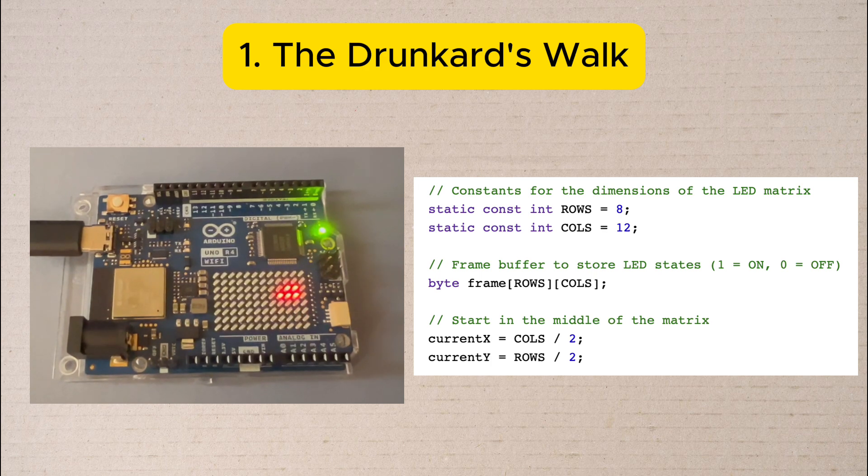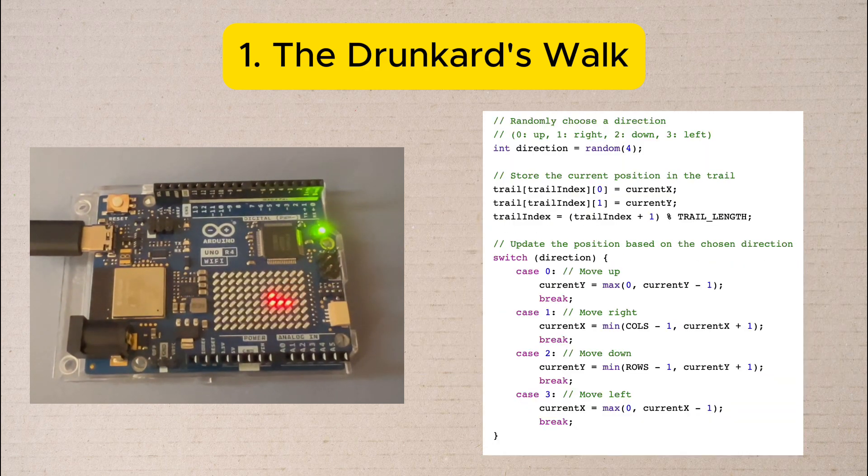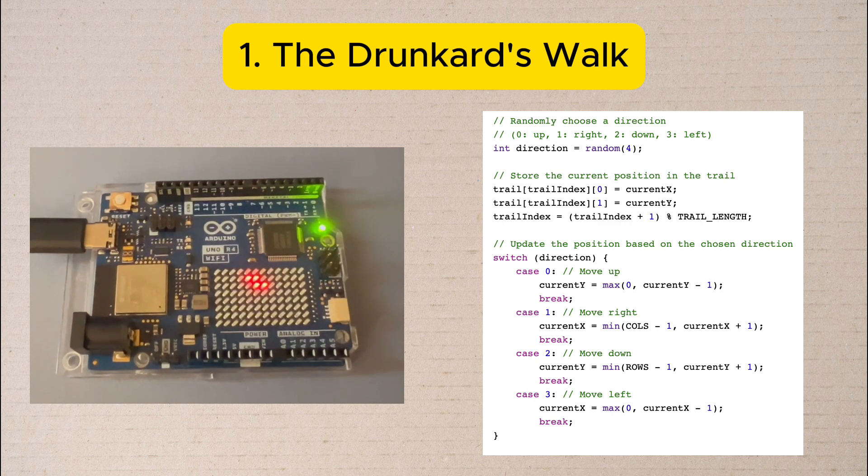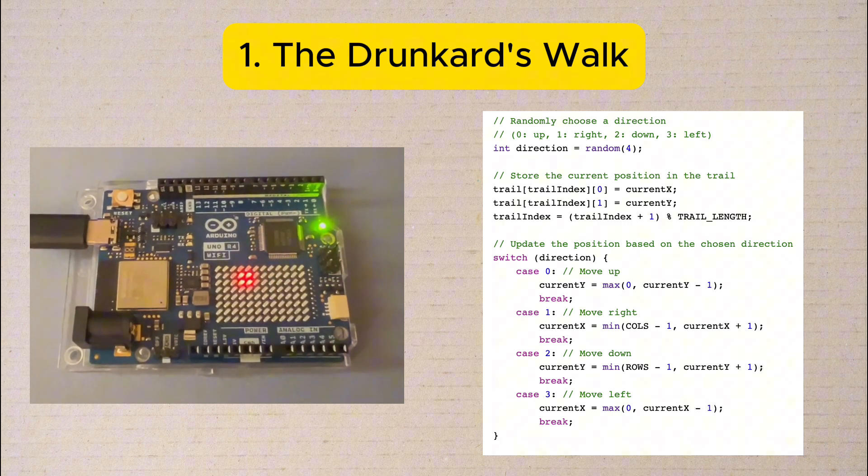Every 200 milliseconds our walker makes a random choice to move in one of four directions: up, down, left, or right.